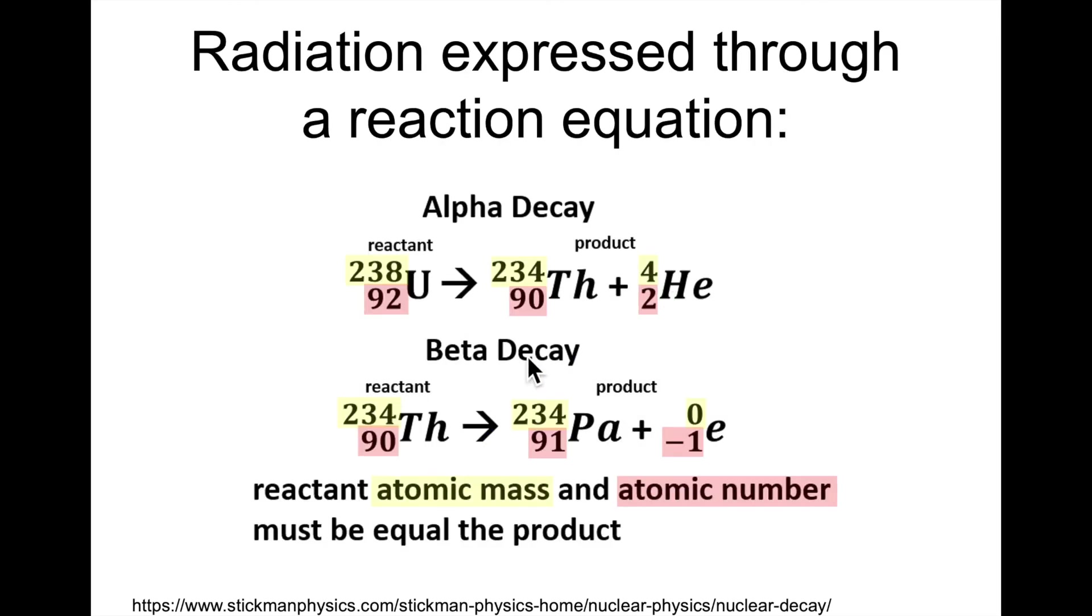If we take a look at the equation, we have Th 234 that becomes Pa 234, because the masses are very similar. But the number of protons changes—90 to 91. Why? Because one neutron became a proton, so essentially there was a gain of one proton, so this has to go up by one.